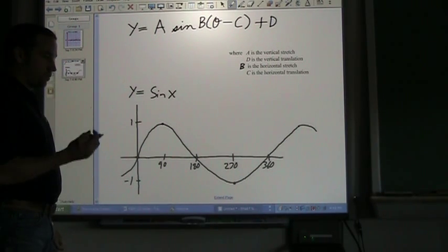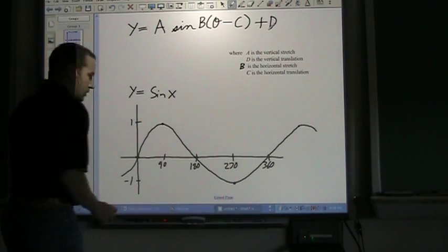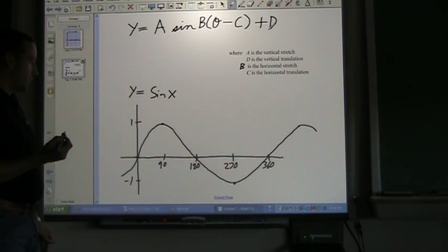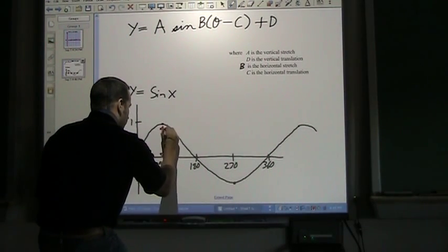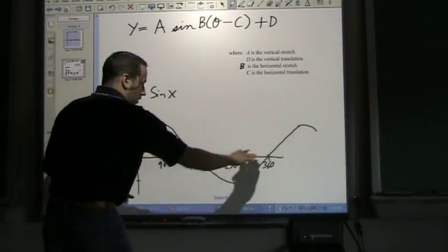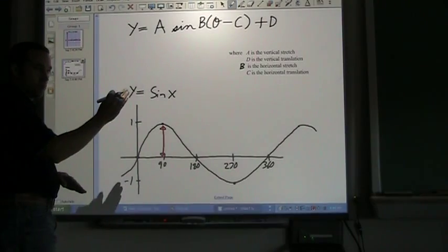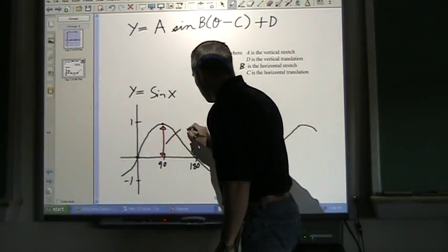A couple of properties of the waves: the amplitude of the wave is from the middle of the wave to its most maximum point. So how far is that distance? So this would be the amplitude.